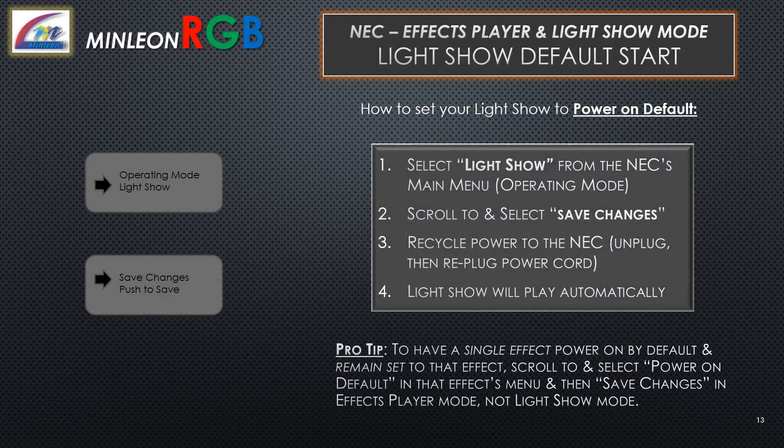Light Show Power on Default. First, select Light Show from the NEC's main menu, scroll to and select Save Changes, then recycle power to the NEC. The Light Show will then play automatically. Pro tip: to have a single effect power on default and remain set to that effect, scroll to and select Power on Default in that effect's menu, then save changes in Effects Player mode — not Light Show Mode.